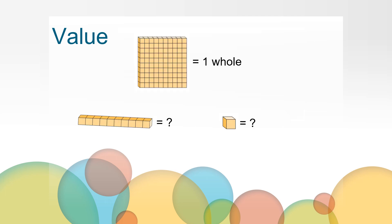What if this block was 1 whole? What would the value of these blocks be? Since it takes 10 rods to make the flat block, the rod is now 1 tenths. It takes 100 cubes to make the flat block. So the cube is now 1 hundredths. These are different ways we can write 1 tenths and 1 hundredths. Notice that the second place after the decimal point is the number that represents the hundredths.